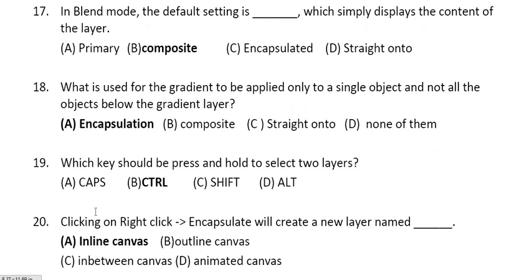Question 19: which key should be pressed and held to select two different layers? The answer is Control key. Not only here, but for example, if I want to select different words, I can use the Control key anywhere to select two or more objects.